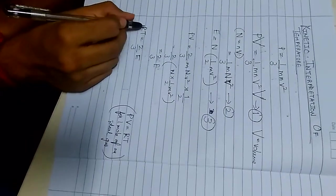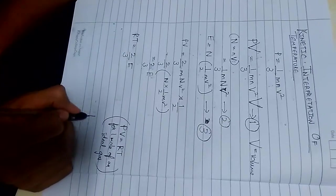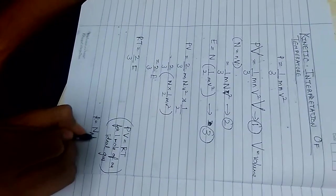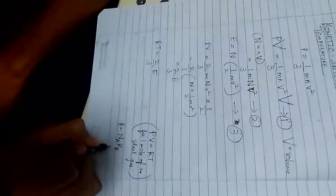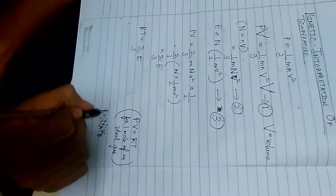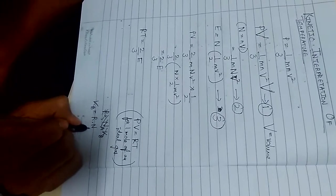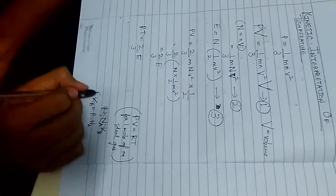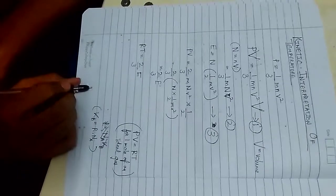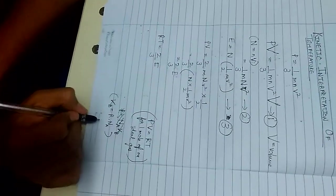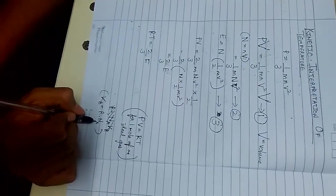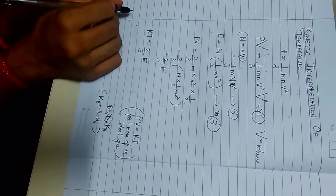And we know that kb is equals to r by na which is the universal gas constant for avogadro number of molecules.